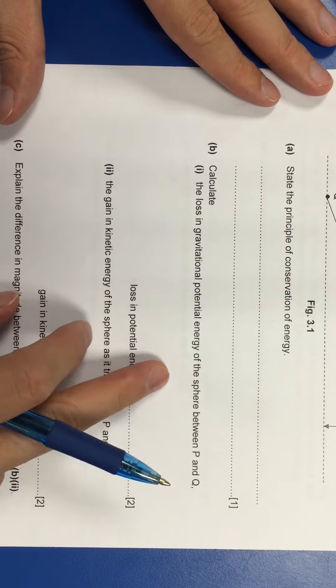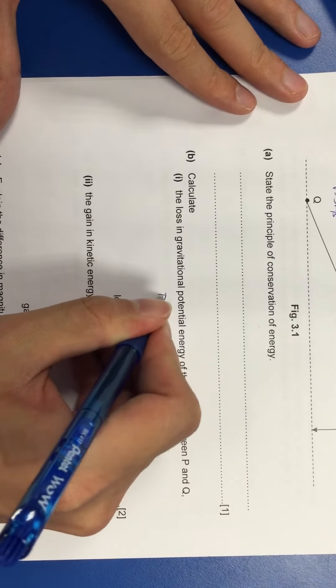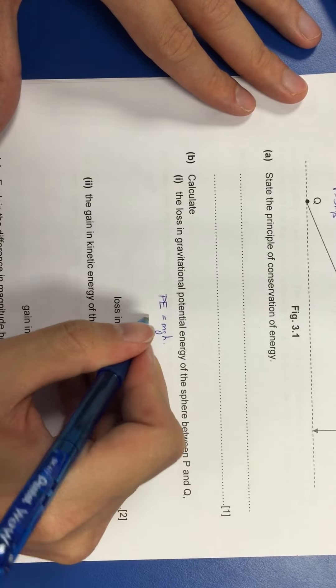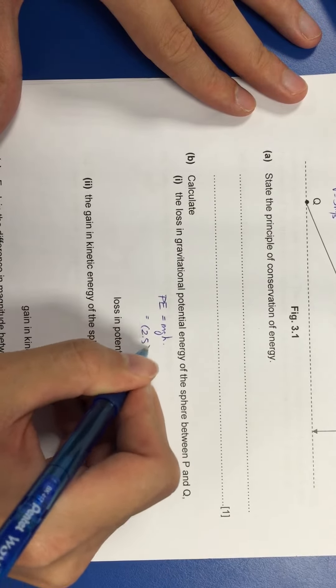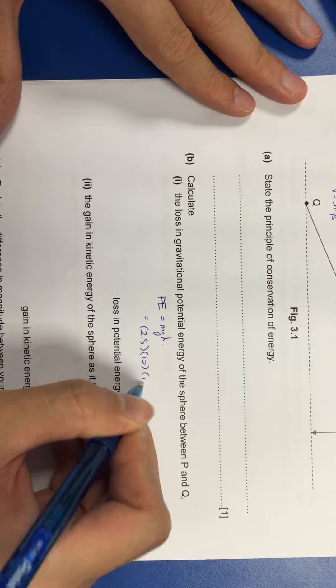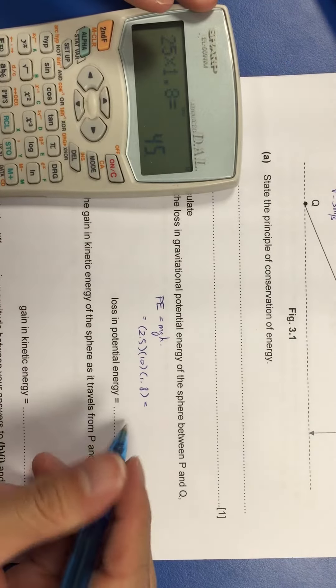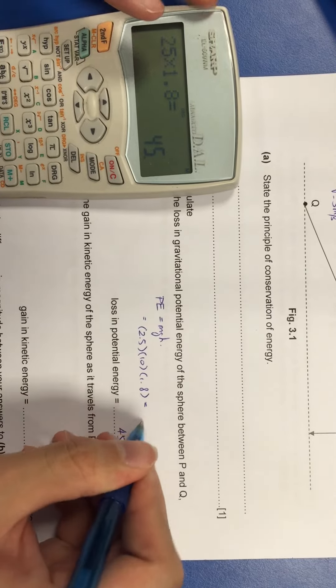Loss in GPE. Loss in GPE I think is quite easy. You just take PE equals to MGH. So therefore you will get 2.5 times 10 times 1.8. So your answer will be 45 joules.